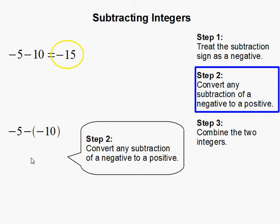Step 2: Convert any subtraction of a negative to a positive. So since we are subtracting a negative, we're going to convert the subtraction of a negative to plus positive. Remember, both negatives will go away entirely and it will become plus positive 10.